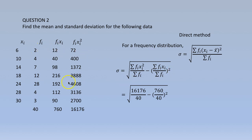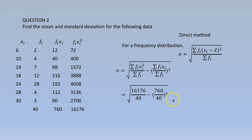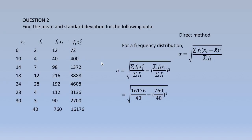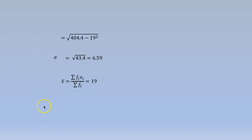We calculate fi·xi and take the sum, then calculate fi·xi squared and take the sum. Substituting gives the square root of 16176 by 40 minus (760 by 40) squared, which gives sigma equal to 6.59. We also need the mean: mean equals summation fi·xi by summation fi, that is 760 by 40, which is 19.